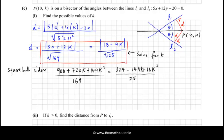What I could do here is I could cross multiply. So I'm going to multiply the left by 25 and the right by 169. OK, so multiplying 25 by the numerator on the left, I get 22500, plus 18000k, plus 3600k². I'm going to multiply the numerator on the right by 169. I get 54756, minus 24336k, plus 2704k².